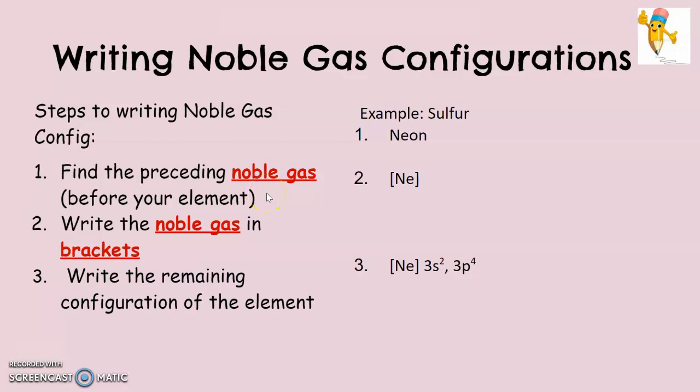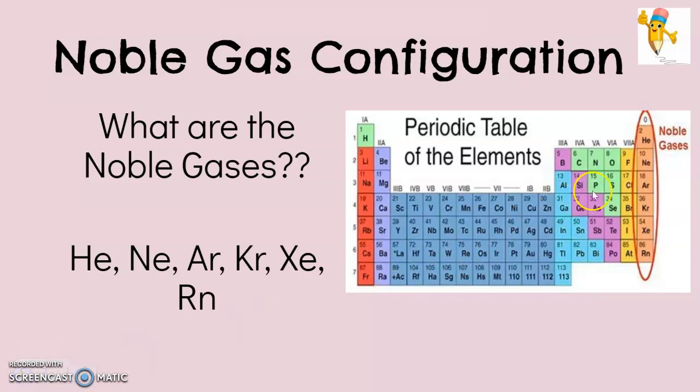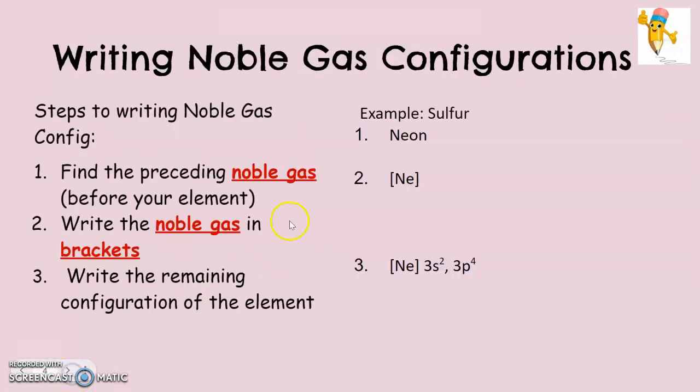So step one, we have to find the preceding noble gas. So let's go back to sulfur, which is right here. Sulfur is in period three. We want to find the noble gas that's in period two. So you just go to the period above the period that your element's in. Sulfur is in three. We want the noble gas from period two. The noble gas of period two, so we're just looking for the noble gas that's in that second row, is neon. So neon is going to be our noble gas that we're going to use. So neon is our preceding noble gas.